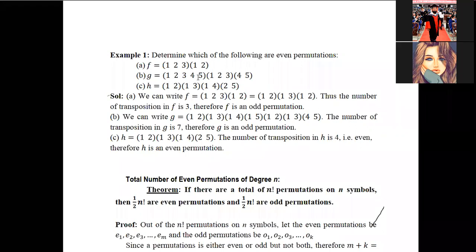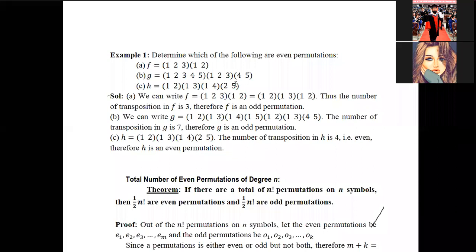For the second example g, it can be written as (1 2)(1 3)(1 4)(1 5), or equivalently (1 5)(1 4)(1 3)(1 2). The number of transpositions is always fixed. Here there are four transpositions, and (1 2)(1 3) adds to a total of seven — seven is an odd number, so g is an odd permutation. For the third example, the total number of transpositions is four, which is even, so it is an even permutation.